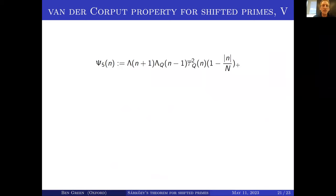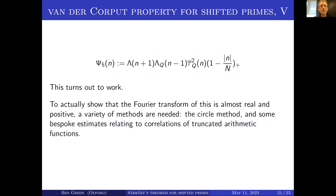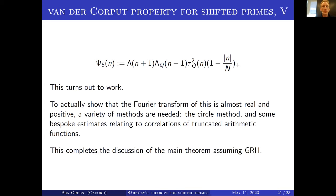Here is a fifth attempt: we take all of the features introduced so far — von Mangoldt of n+1 — but now I replace the von Mangoldt of n−1 and the divisor function by Fourier-truncated proxies for them, and I keep the Fejér kernel. That turns out to work. To actually show that this has Fourier transform that is basically real and positive, you need quite a lot of machinery: the Hardy-Littlewood circle method, and some bespoke estimates for correlations of these Fourier-truncated functions that I hadn't seen elsewhere in the literature. All of this assuming GRH.